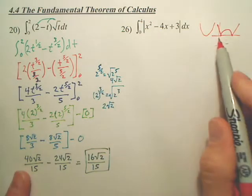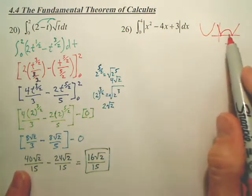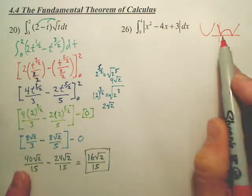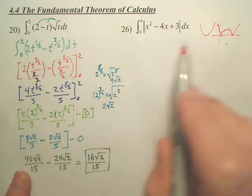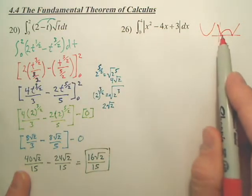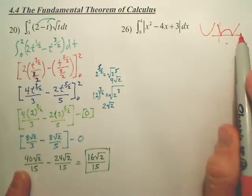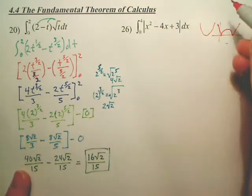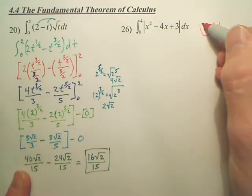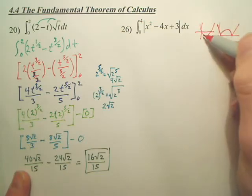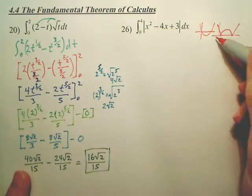So it's going to look something like this. Basically, when you find the area from 0 to 4, everything's going to be positive. Where here it would have some negatives, but it got flipped over.